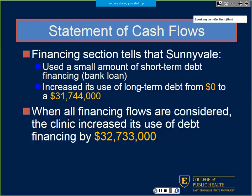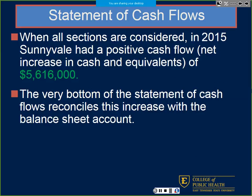We used a small amount of short-term debt and increased our long-term debt. It tells you a story of what happened to the organization over this period — we increased our use of debt by almost $33 million. We made a lot of investments into short- or long-term securities, loans, land, or equipment in 2015. When all sections are considered, we had a positive cash flow of $5,616: net cash from operations plus net cash from investing plus net cash from financing.